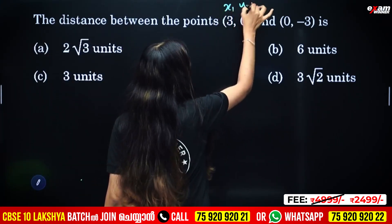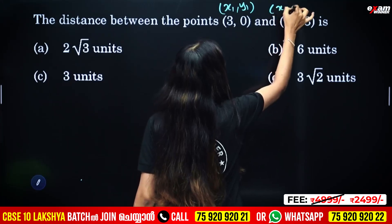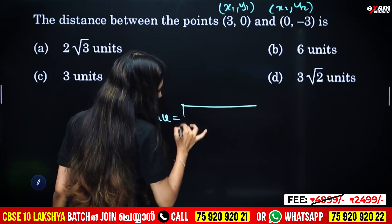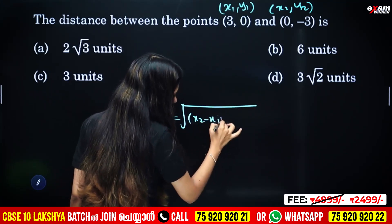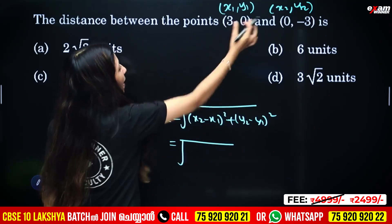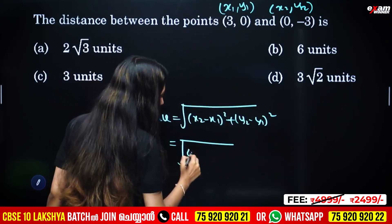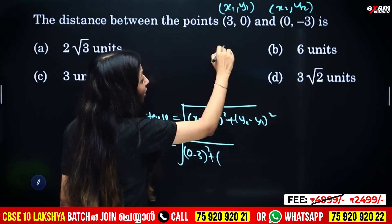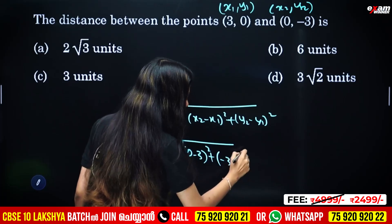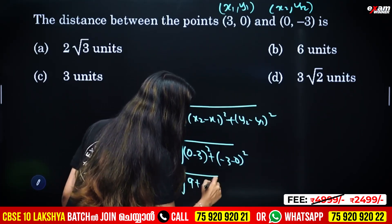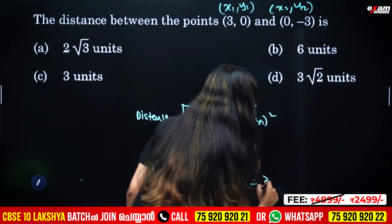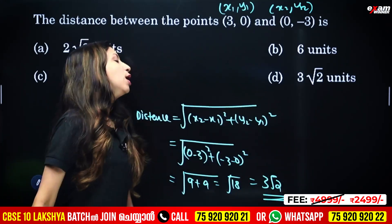We have x1, y1 and x2, y2. Distance is equal to the square root of (x2 minus x1) whole square plus (y2 minus y1) whole square. We apply this: root of (0 minus 3) whole square plus (minus 3 minus 0) whole square. That gives root of 9 plus 9, which is root 18, which equals 3 root 2 units.